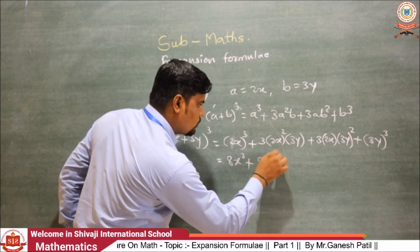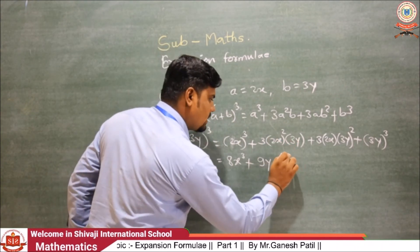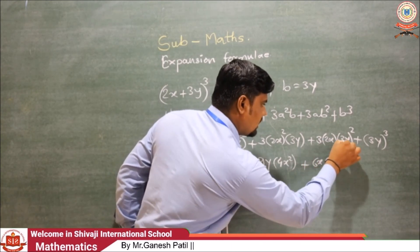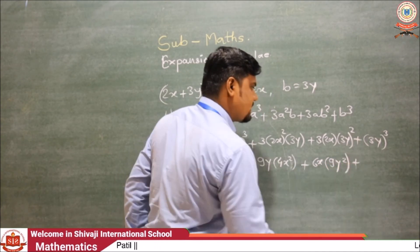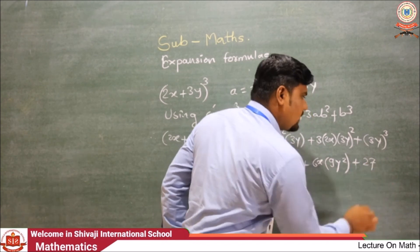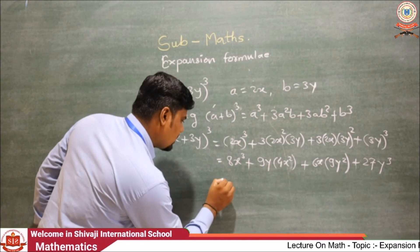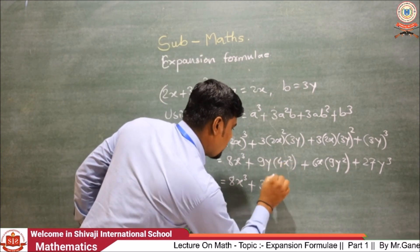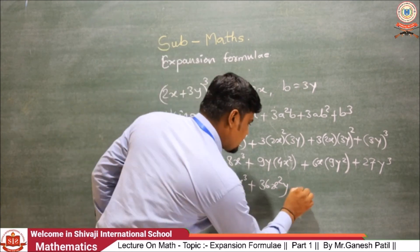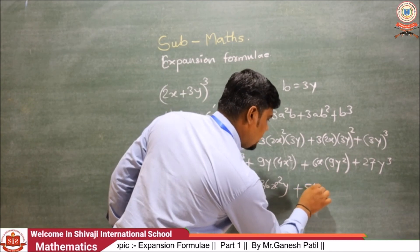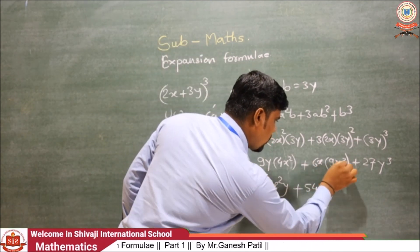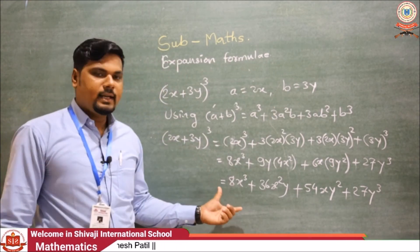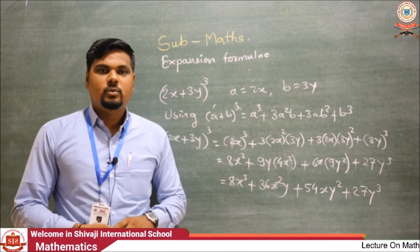For the second term: 3 × (2x)² × (3y) = 3 × 4x² × 3y = 36x²y. For the third term: 3 × (2x) × (3y)² = 3 × 2x × 9y² = 54xy². For the last term: (3y)³ = 27y³. So the final answer is 8x³ + 36x²y + 54xy² + 27y³. We will discuss the next part in the next video.